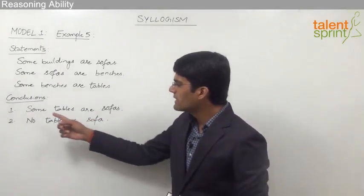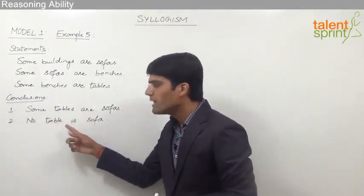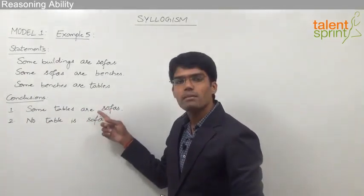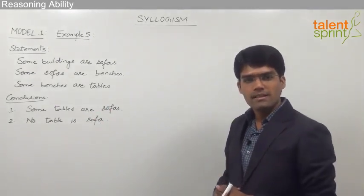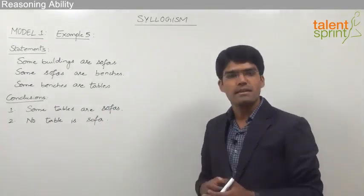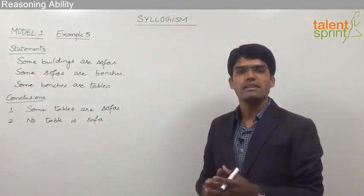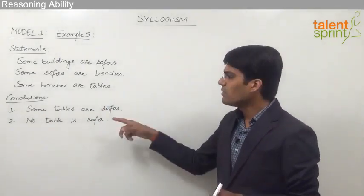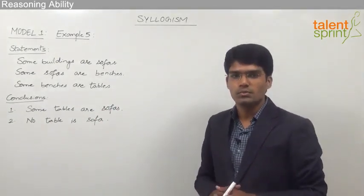These two conclusions are in the form of 'some A's are B's' and 'no A is B', which is a complementary pair of statements. As already mentioned, whenever we have a complementary pair, we have to check all the various diagrams possible to find out which of these conclusions are true.